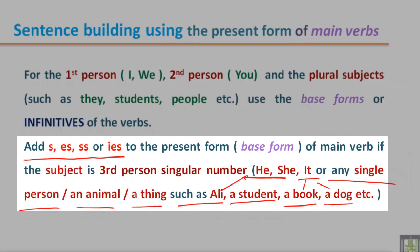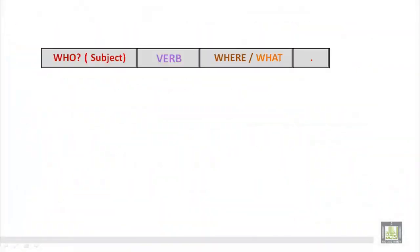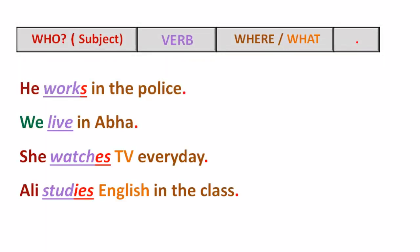For example: Ali is a single person, or we can replace him with 'he.' A student can be referred to as he or she. A book or a dog refers to 'it.' When we use these pronouns as subjects, we must use the main verb carefully. The structure is: who for the subject, then the main verb, then adverbs like where or what time, and the full stop. Example: He works in the police — the subject is singular, so we add S to the main verb 'work.' In contrast: We live in Abha — 'we' is plural, so no S, ES, or IES is added.